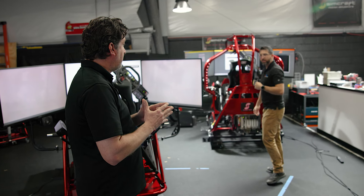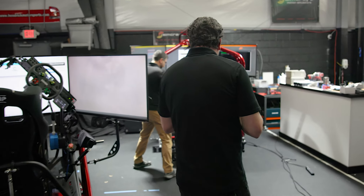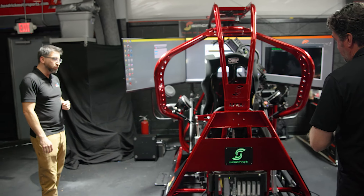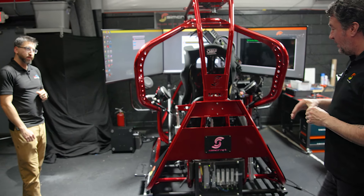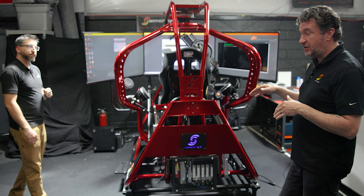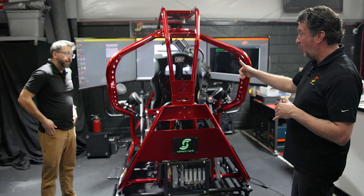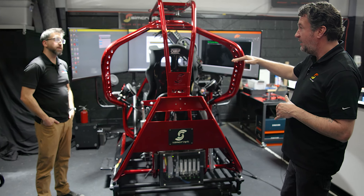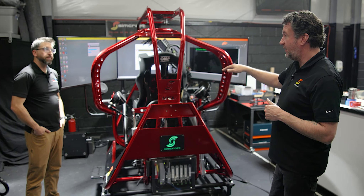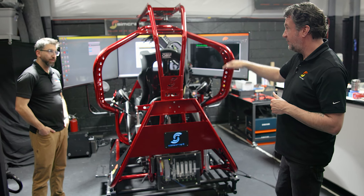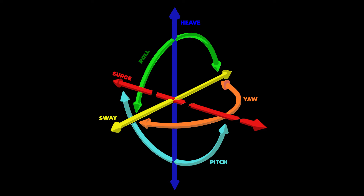So maybe take me through what is happening — how does this unit move? This unit moves three rotations and three translations. The rotations are roll, pitch, and yaw. And the translations are surge, sway, and heave. So this unit moves in all possible directions.